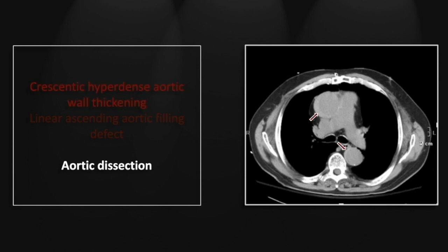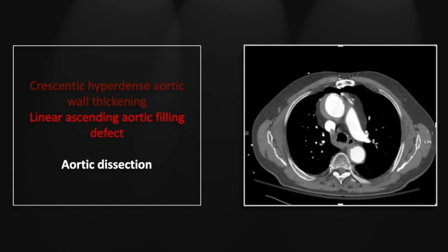There is a crescentic hyperdensity adjacent to both the ascending and descending thoracic aorta. On the contrasted study you can see the now relatively hypodense crescent distorting the ascending aorta, and the all-important dissection flap is visible on its anterior aspect, with a small bit of focus within the aortic media outlining the back aspect of that dissection flap.